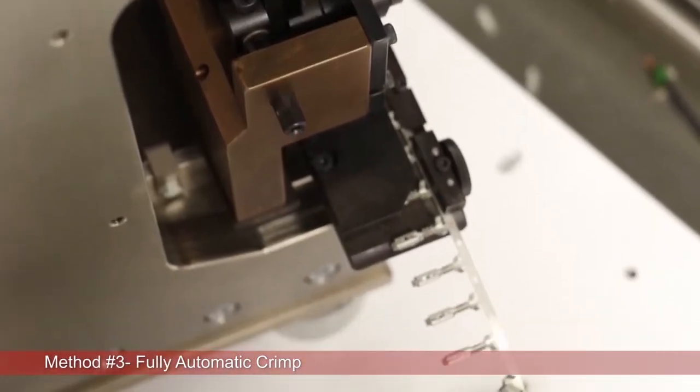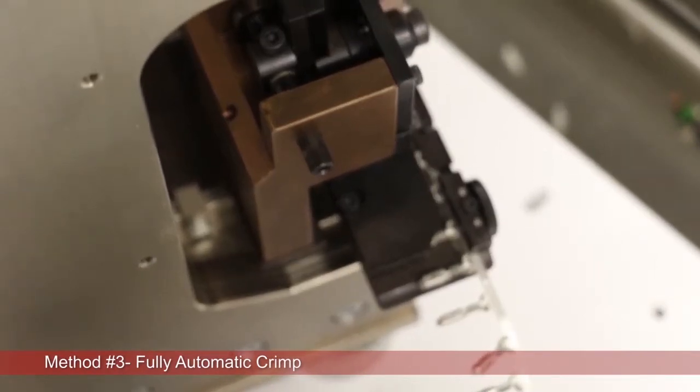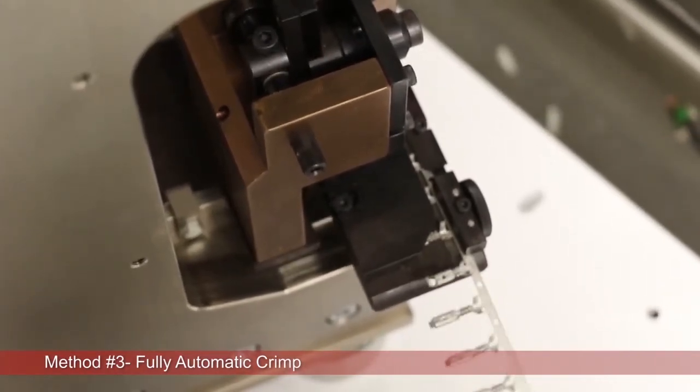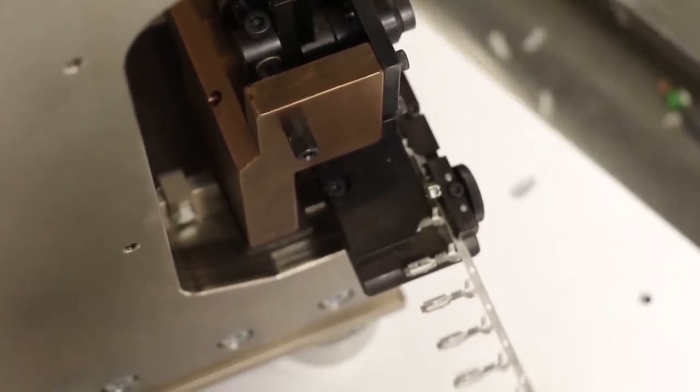As you can see, as it cuts, strips, crimps, and seals, it's going to put the wire lead into a tray, which will then get fed to the opposite side for installation. It's also going to be able to do a crimp force monitor once we get to the other side.